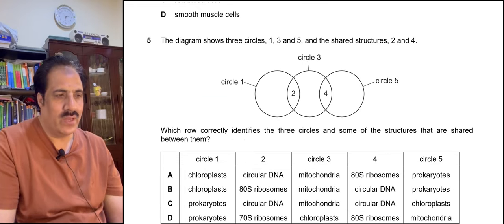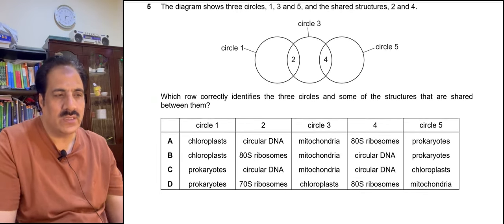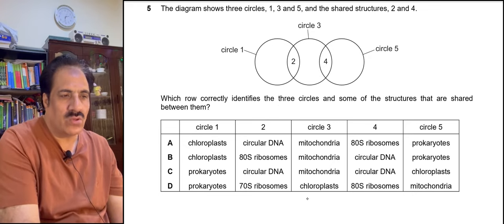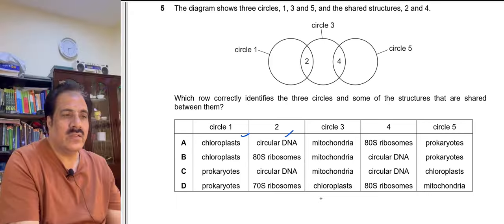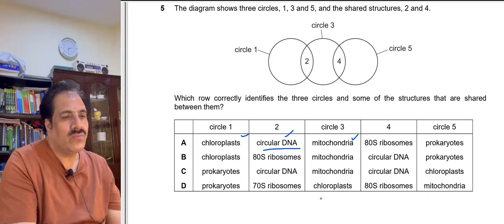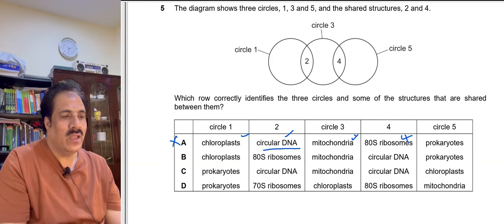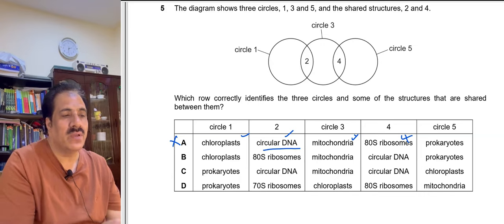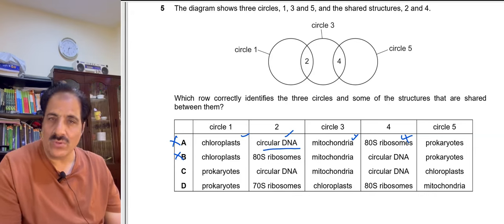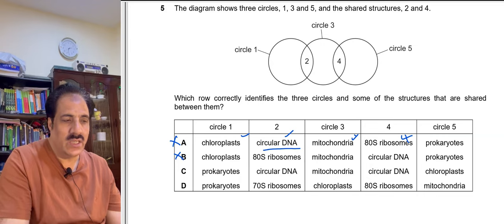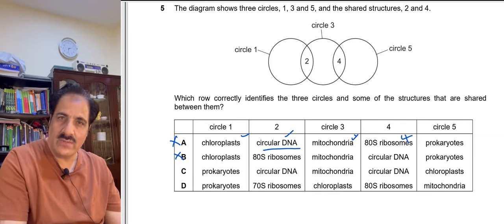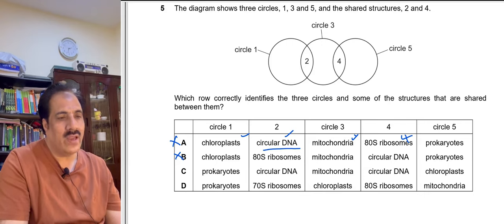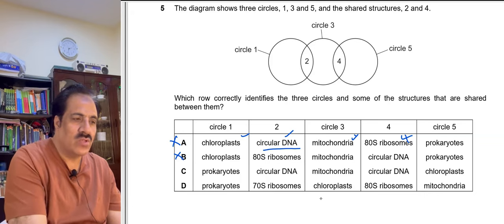Question 5: The diagram shows three circles (1, 3, and 5) with shared structures (2 and 4). In option A, circle 3 is mitochondria with 70S ribosomes, but 70S ribosomes are not present in mitochondria, so option A is wrong. Option B gives 70S ribosomes in chloroplast, which is also incorrect. Option C has circle 1 as prokaryotes with circular DNA, circle 3 as mitochondria also containing circular DNA, and circle 5 as chloroplast also containing circular DNA — so option C is the correct answer.